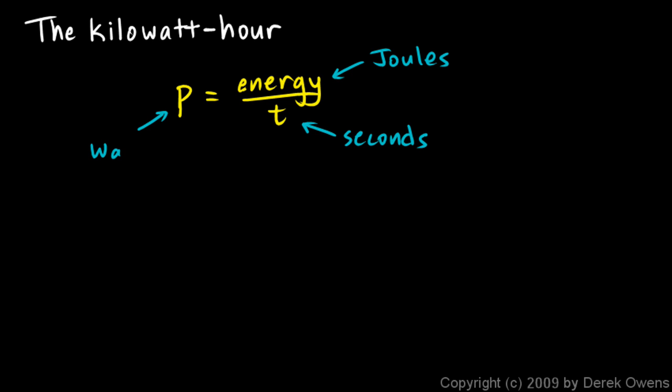And then the power is in watts. Remember that 1 watt is equal to 1 joule per second, so a 100 watt light bulb is using 100 joules of energy per second.